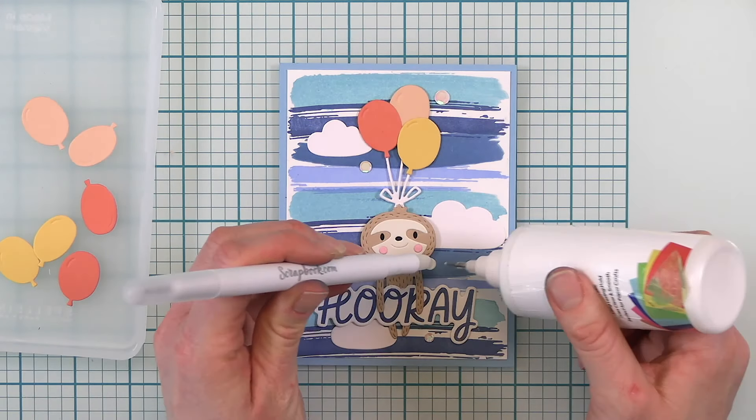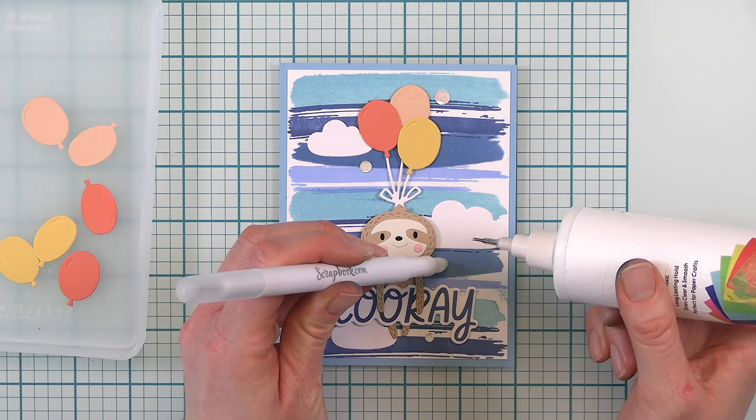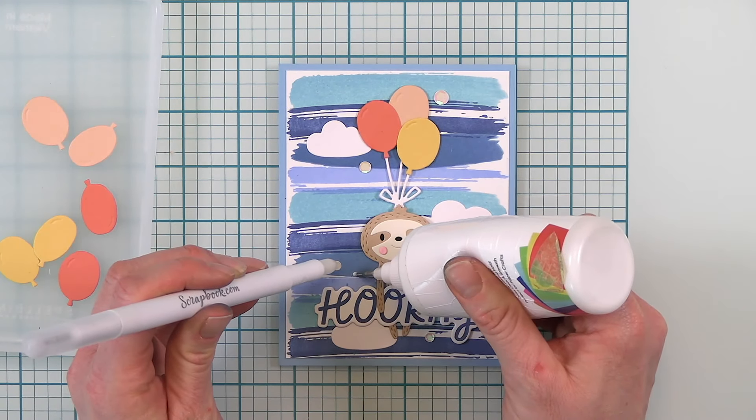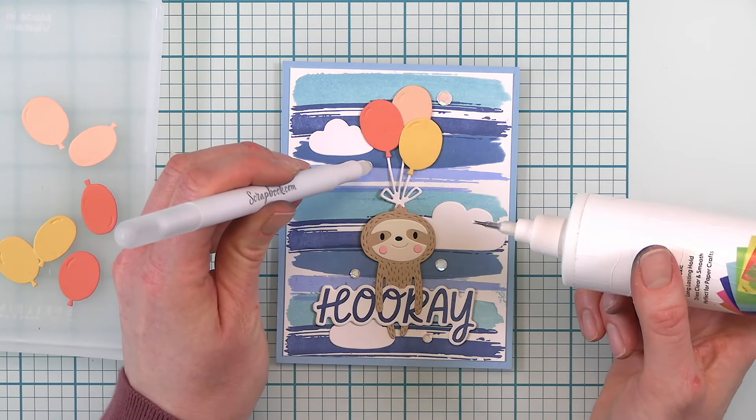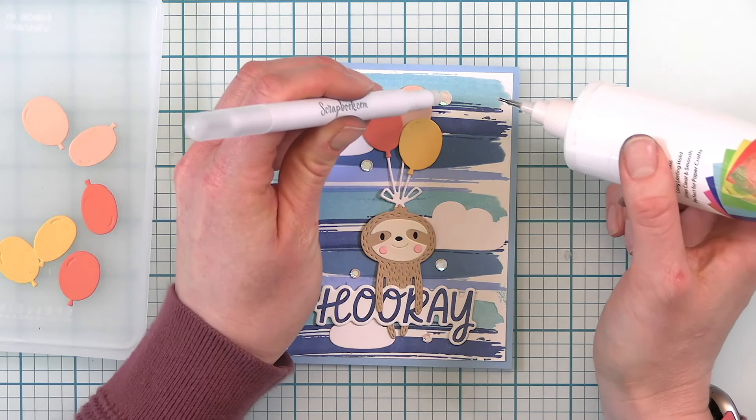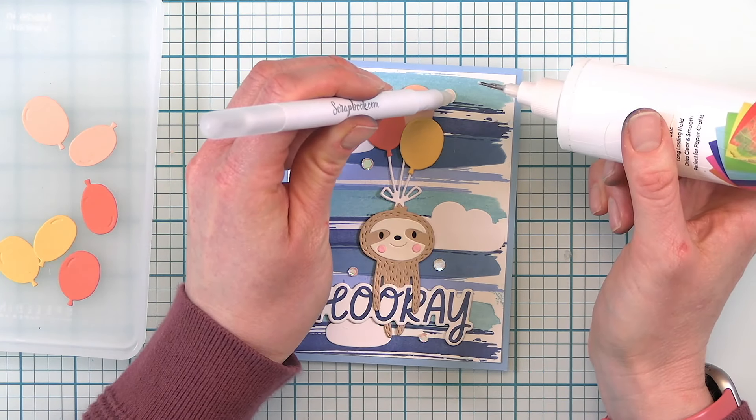The last thing I added were some Aura Opalescent sequins and these are my favorite Spellbinder sequin because I feel like they just go with everything. I just put five of these around my sloth and the balloons.